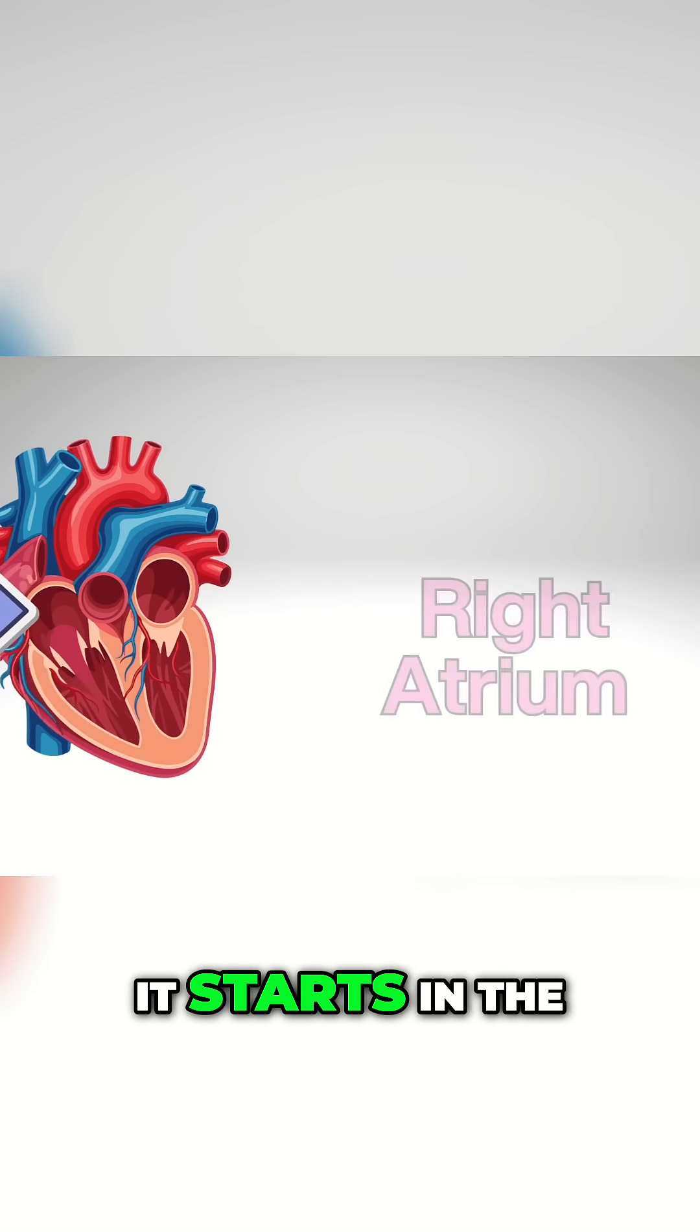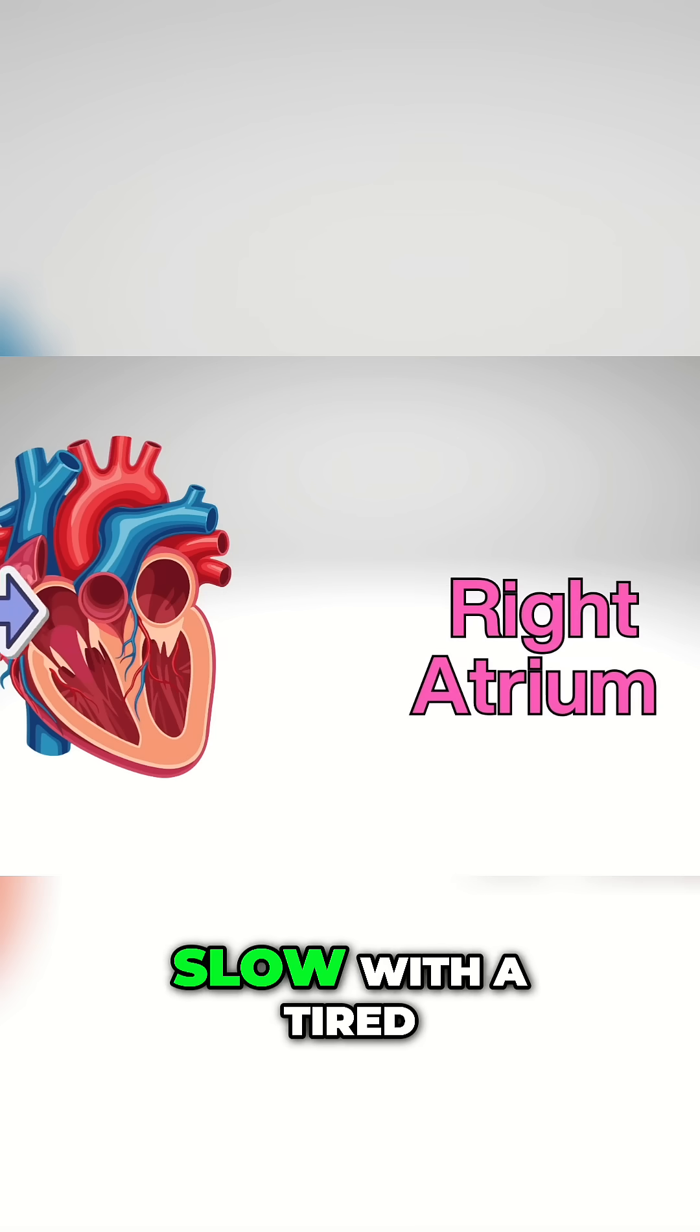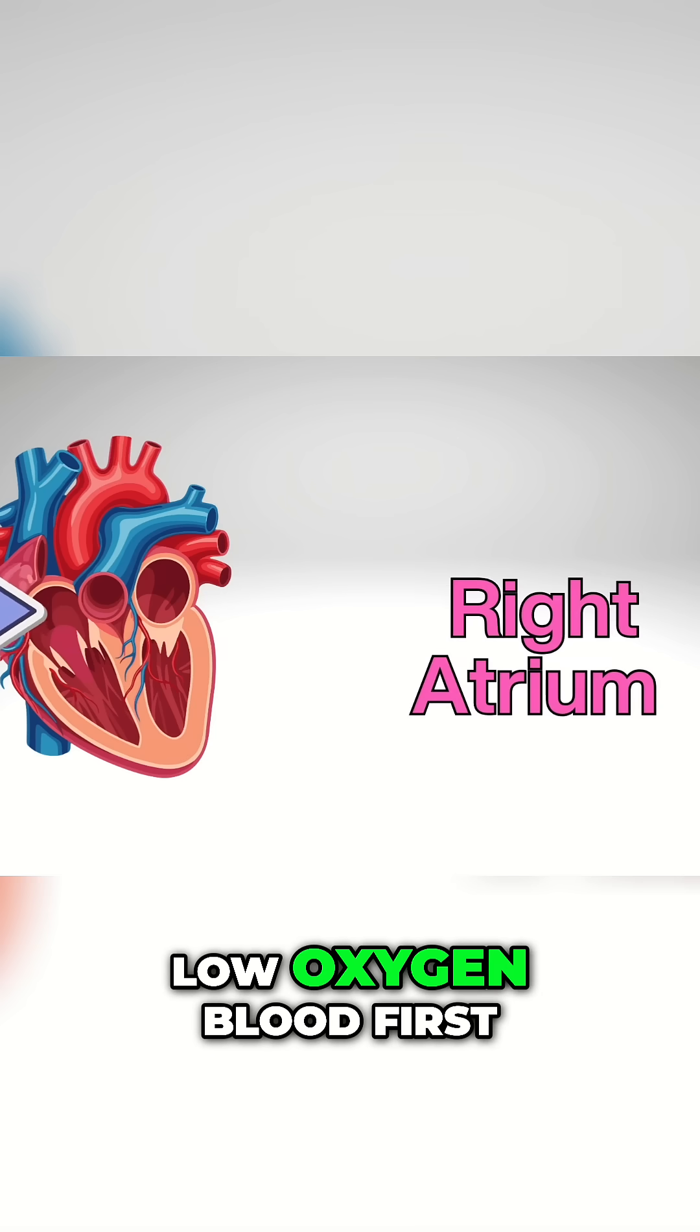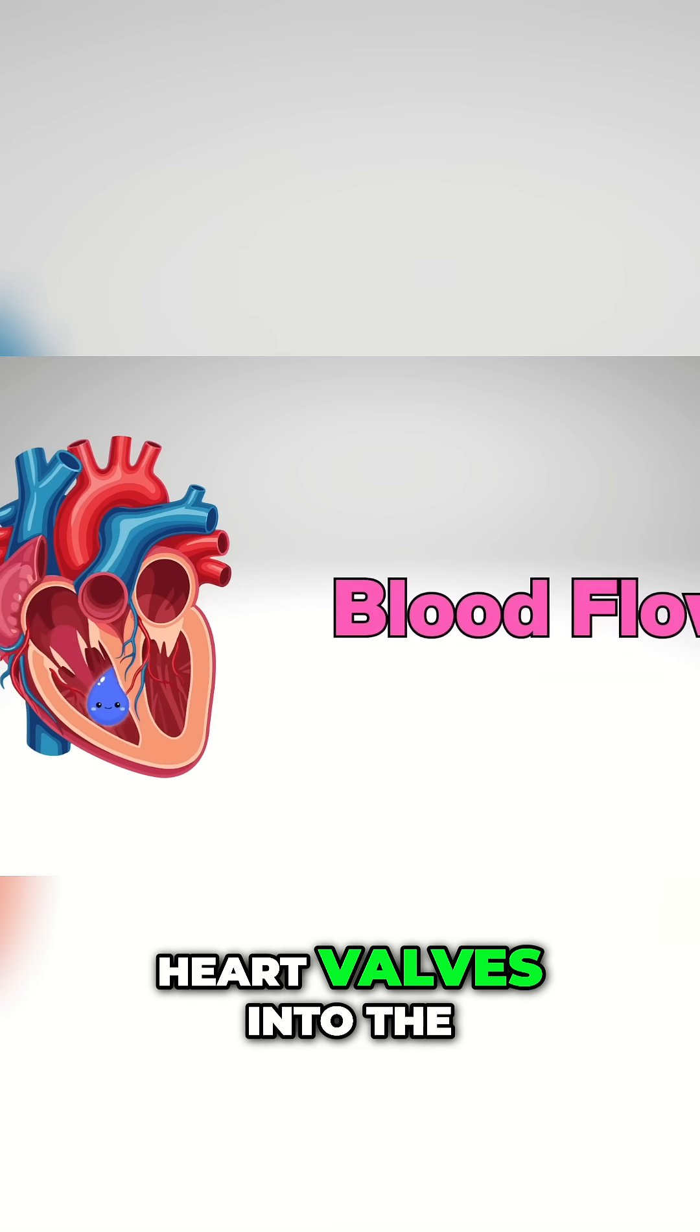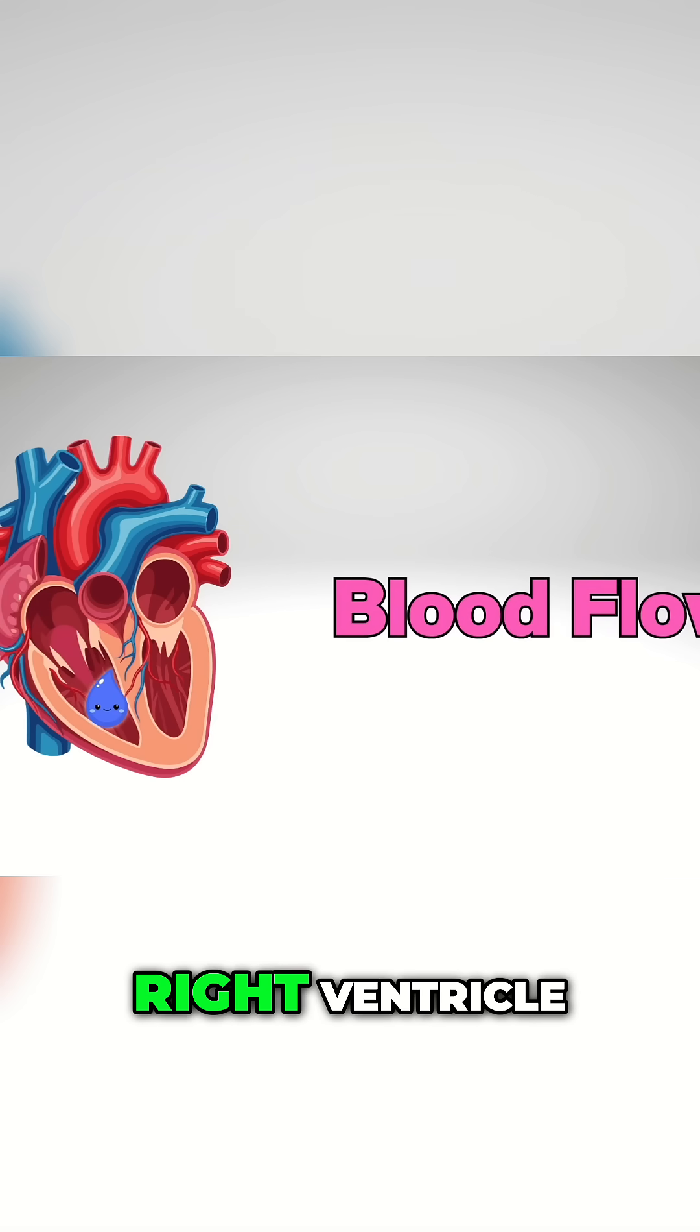It starts in the right atrium, calm and slow, where the tired, low oxygen blood first comes. Then down the blood moves through the heart valves into the right ventricle.